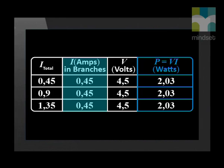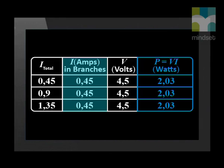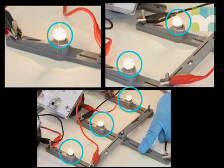What do you notice about the power measurements? The power in each light bulb is the same, no matter how many light bulbs we add in parallel. Do you remember what happened to the brightness of the light bulbs as we added more light bulbs in parallel? The brightness remained the same. We know that the brightness of a light bulb is an indicator of the amount of energy being converted per second — hence the power. So, because the light bulbs all have the same brightness, they dissipate equal amounts of power.